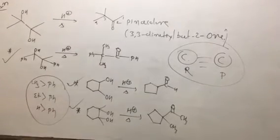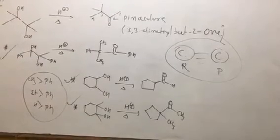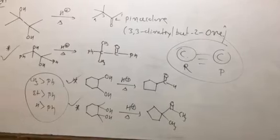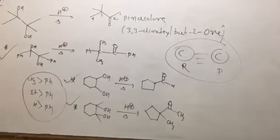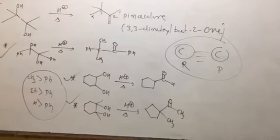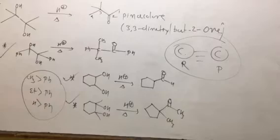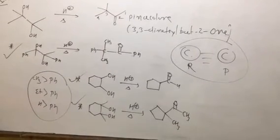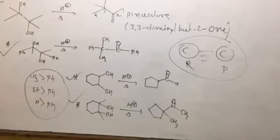This is a rearrangement reaction where the starting reactant molecule is a pinacol and the final product is pinacolone. Vicinal diol is converted into the ketone in acidic conditions by 1,2 shifting rearrangement.